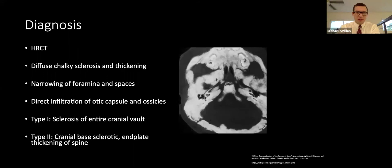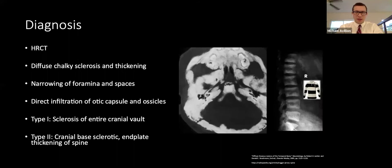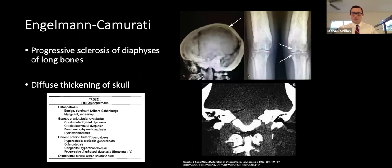Aside from biopsy, the diagnosis of osteopetrosis is radiographic in conjunction with clinical findings. There is diffuse involvement of the calvarium and otic capsule with chalky sclerosis and thickening, with narrowing of foramina and spaces. There are two types of the autosomal dominant form: Type 1 shows sclerosis of the entire cranial vault, while Type 2 shows sclerosis of the cranial base with spinal involvement called end-plate thickening, or 'rugger jersey spine.'